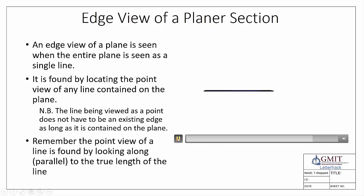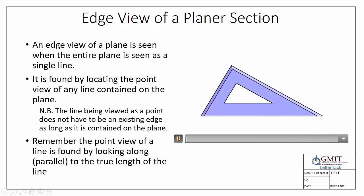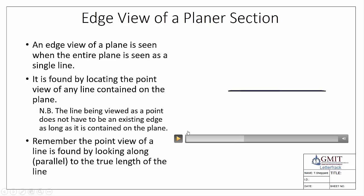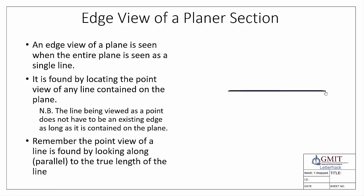It doesn't matter which edge we pick — we can do the same with this edge here and again we see the point view of the edge and the edge view of the plane. If you don't have an existing edge you want to use, you can draw another line on it — as long as it's on the plane and we see it as a point view, this will work. We're going to take a couple of different scenarios using the same examples from our point view of a line videos, just adding an extra point to make a plane.